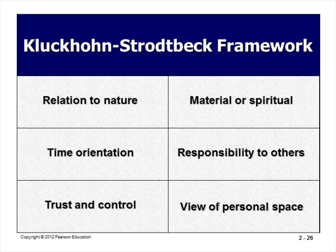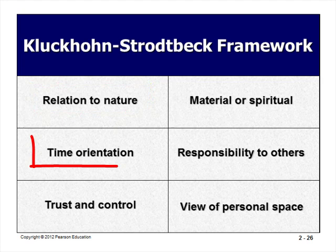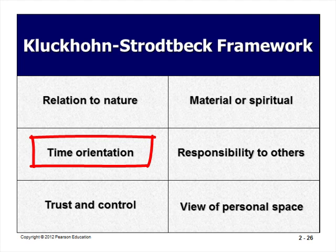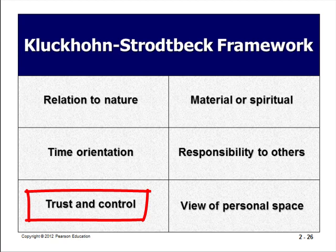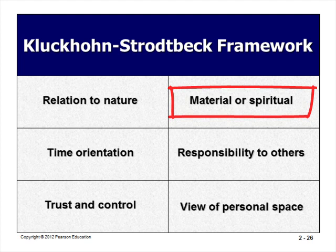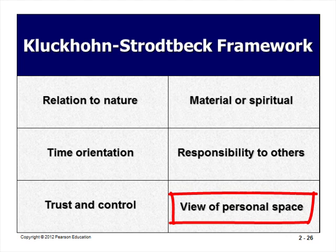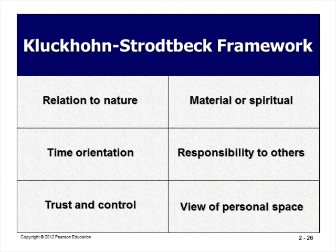The Kluckhohn-Strodtbeck framework compares cultures along six dimensions by asking: (1) Do people believe that their environment controls them, that they control the environment, or that they are part of nature? (2) Do people focus on past events, on the present, or on the future implications of their actions? (3) Are people easily controlled and not to be trusted, or can they be trusted to act freely and responsibly? (4) Do people desire accomplishment in life, carefree lives, or spiritual and contemplative lives? (5) Do people believe that individuals or groups are responsible for each person's welfare? (6) Do people prefer to conduct most activities in private or in public?